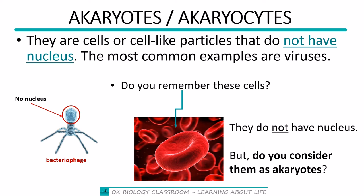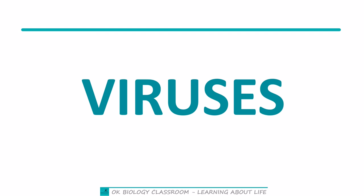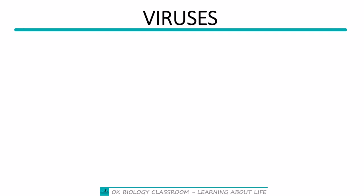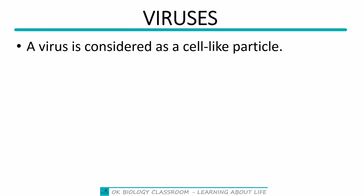Since viruses are the most common examples of acaryotes, it is important for us to look at what viruses are. From the definition of acaryotes, we know they could be cells or cell-like particles — but viruses are the cell-like particles. They are not considered as cells because they don't have the full nature of cells. Some scientists even define them as the link between non-living things and living things.